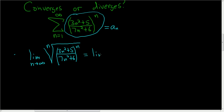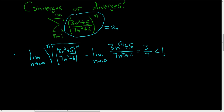When you take the nth root of something being raised to the nth power, it goes away. So you just get (3n²+5) over (7n²+6). The degrees match — it's 3 over 7. That's less than 1, so it converges by the root test.